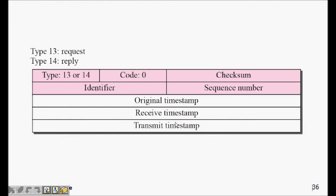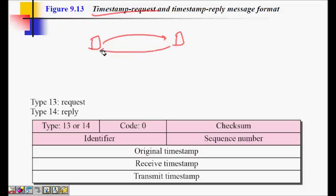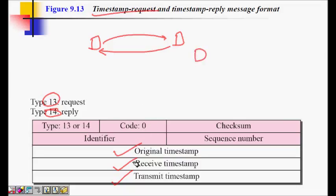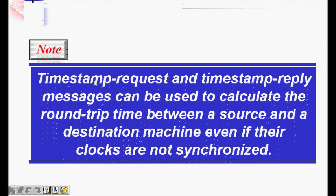Another ICMP query message is the timestamp request and timestamp reply. In a timestamp request, I ask the other computer to send me its current time, and it replies with a timestamp reply. The type for timestamp request is type 13 and reply is type 14; code is 0. The fields include original timestamp, receive timestamp, and transmit timestamp.